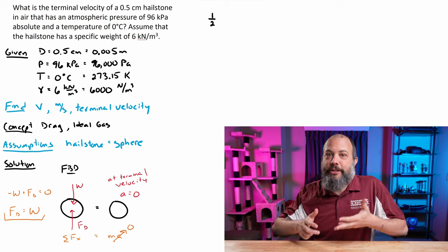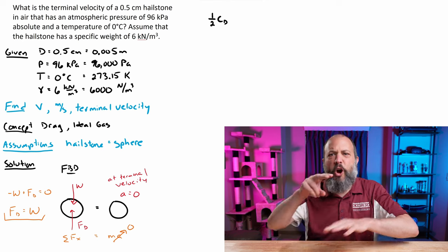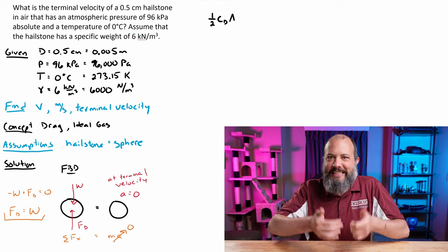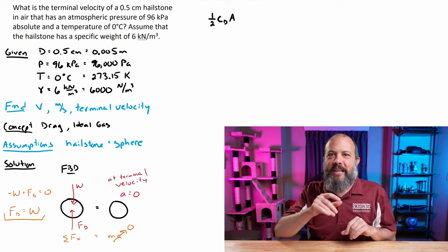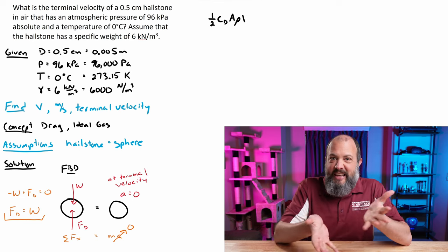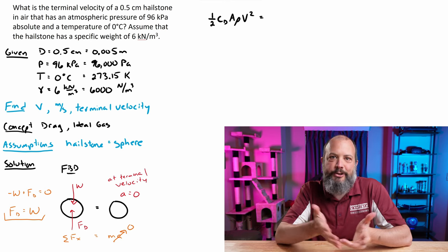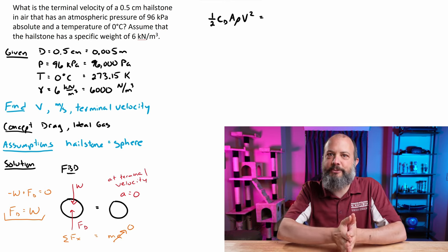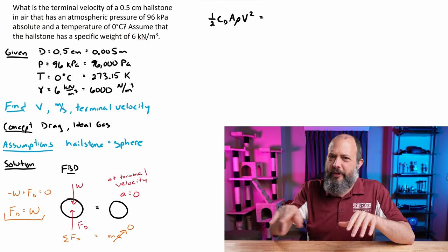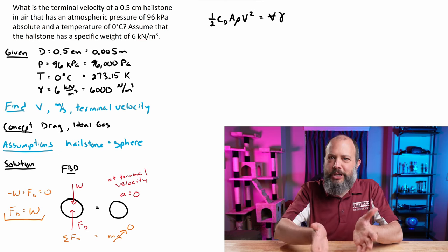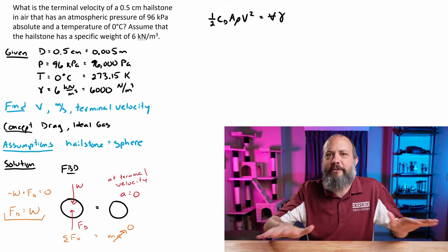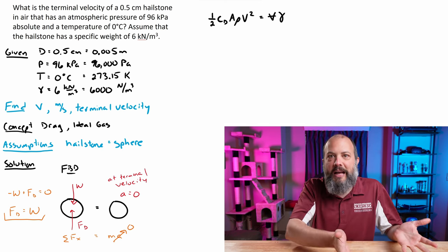Drag force equation is the drag coefficient, the cross-sectional area that's essentially seeing the wind, density and velocity squared. Weight can be calculated a bunch of different ways, but since we were given specific weight, you can get to weight by specific weight times volume. So this V with a horizontal line through it, that's volume in a way to make sure that you never get it mixed up with V for velocity.